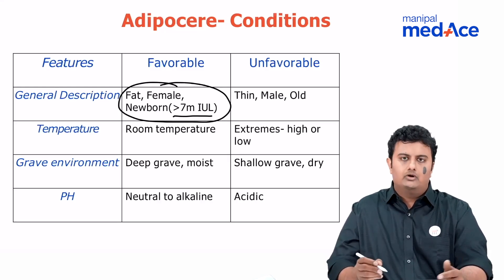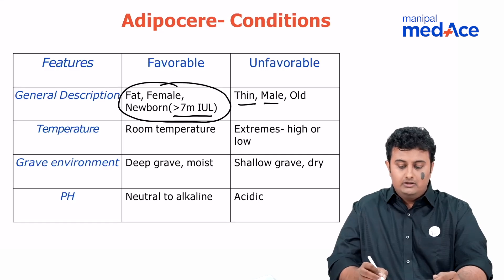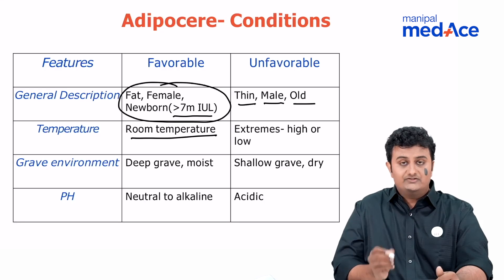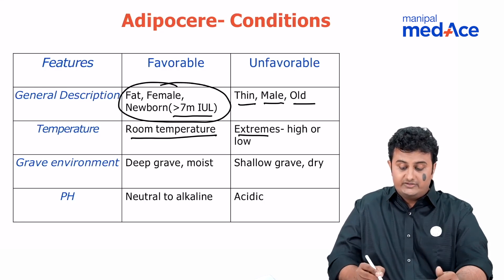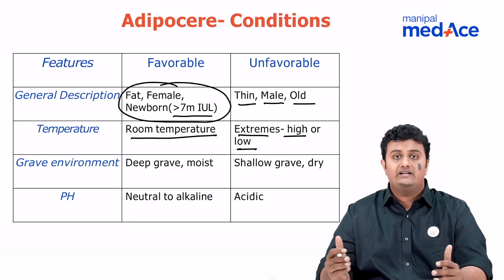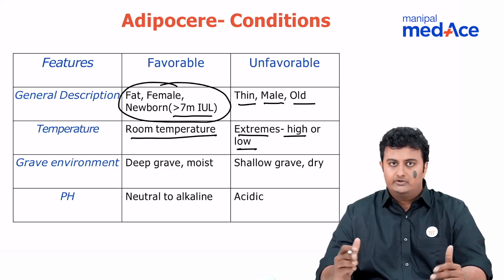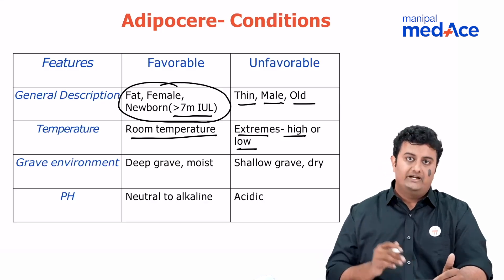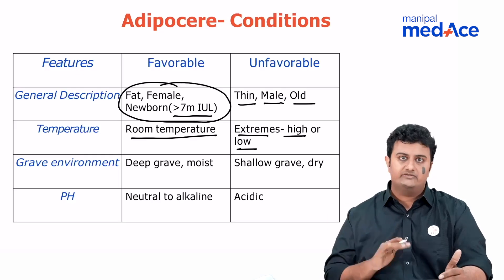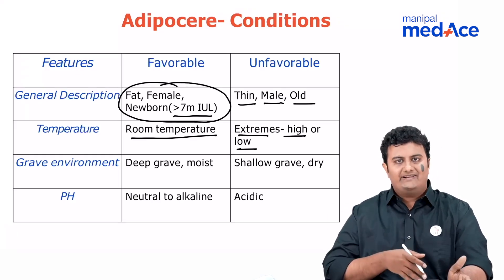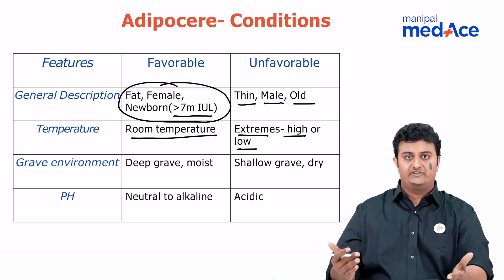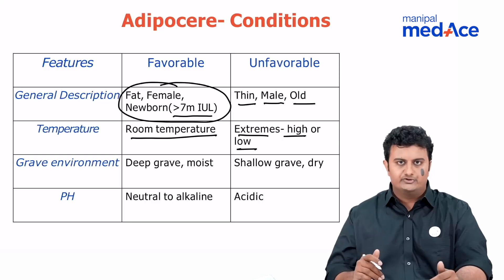Unfavorable is obviously someone who is thin, male, and old. Regarding temperature, what is favorable is room temperature, and what is unfavorable is extremes of high or low temperature. It requires normal room temperature — it could be a little warmer, but not extremes of either. The reason is simple: bacterial activity and enzyme activity are going to be highest at a temperature optimal for survival, which is somewhere around room temperature.